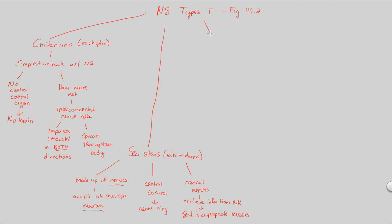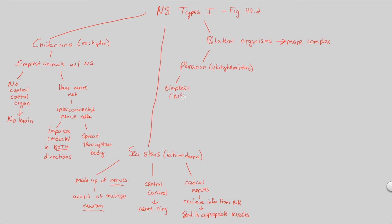Let's continue increasing complexity by looking at bilateral organisms — organisms like you and I that have a plane of symmetry giving them bilateral symmetry. These are generally more complex organisms. Looking at the planarian, which falls under the phylum Platyhelminthes, these will have the simplest central nervous system — a true CNS that includes a brain.